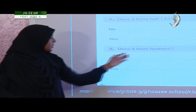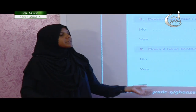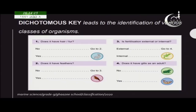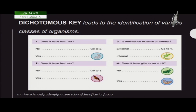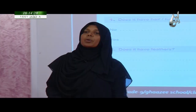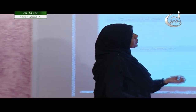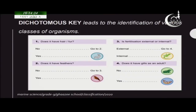No feathers means you go to number three. Now two organisms are already identified. Moving on with the remaining three organisms, the next question is: is fertilization external or internal? Internal fertilization is found only in the lizard; the remaining two have external fertilization. So the lizard is identified, and those with external fertilization go to step four.